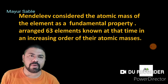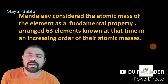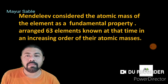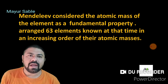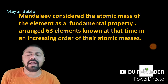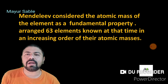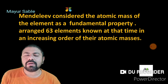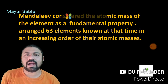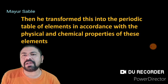By the time of Newlands, 56 elements were known, but by the time of Dmitri Mendeleev in the year 1869, 63 elements were known. He arranged all 63 known elements according to the increasing order of their atomic masses and then transferred them into a periodic table, placing elements according to their physical and chemical properties.